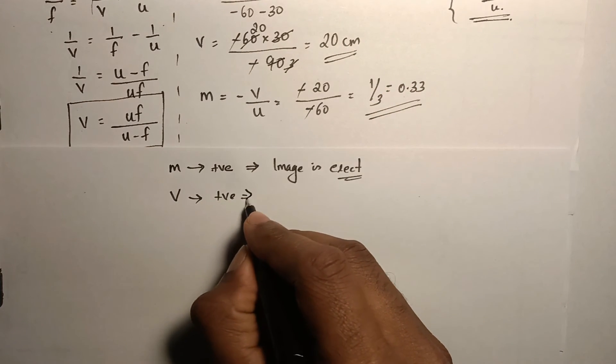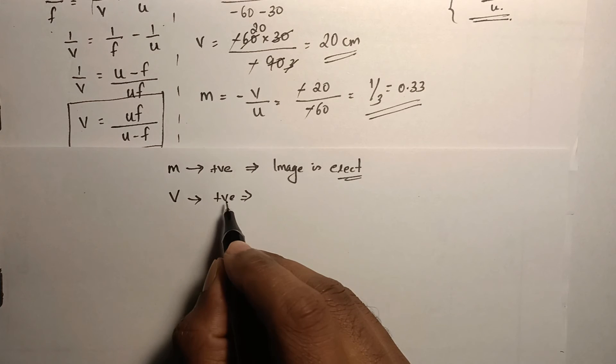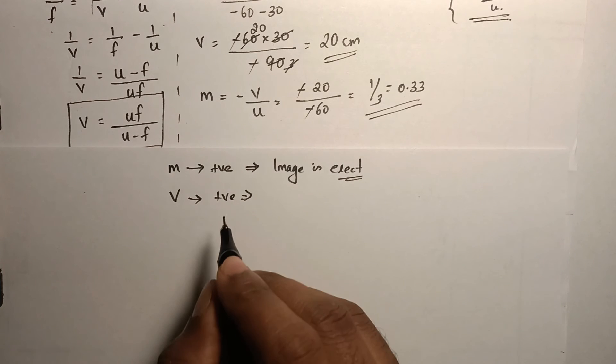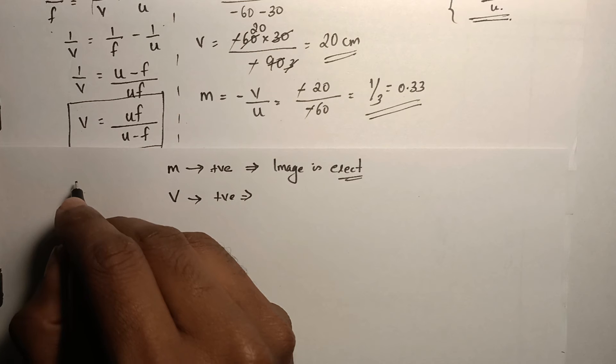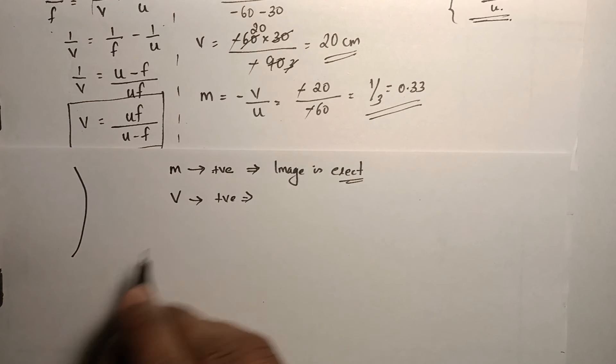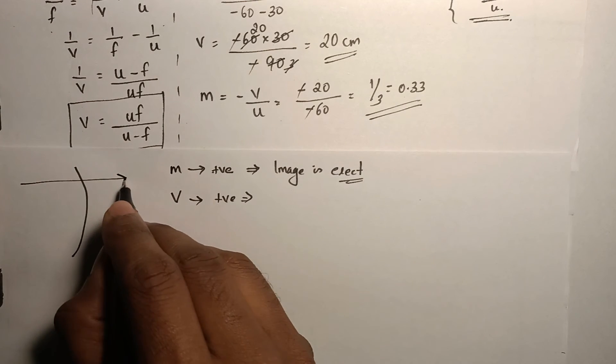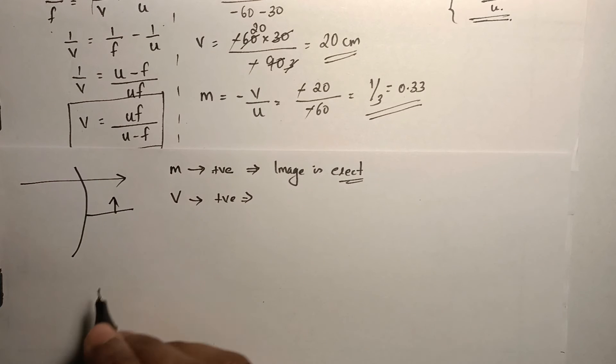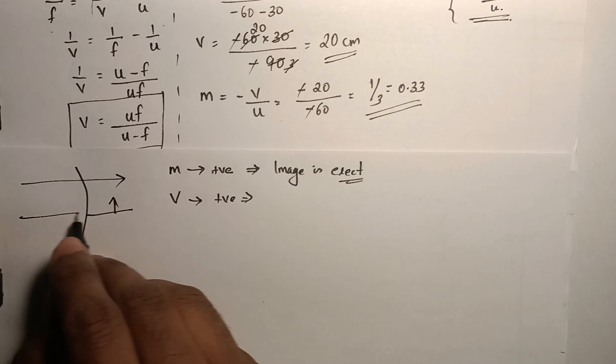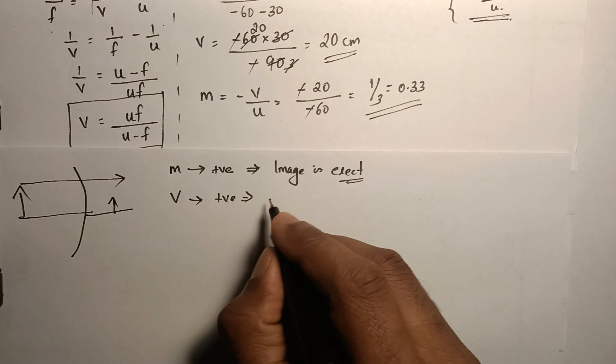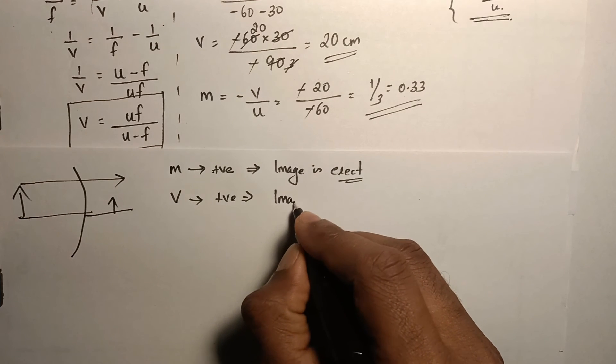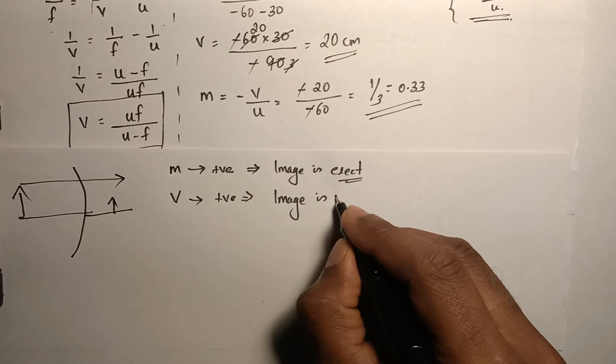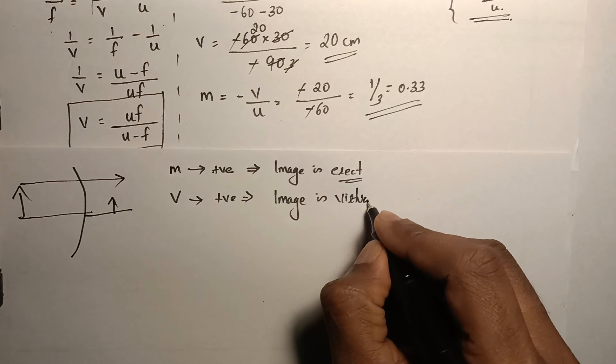And the object distance is positive. The 20 is a positive number. If object distance is positive, it means that the image is formed in the direction of light or behind the mirror. It is behind the mirror such that it is virtual. Image is virtual.